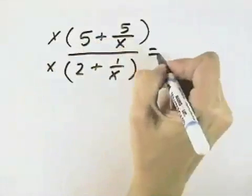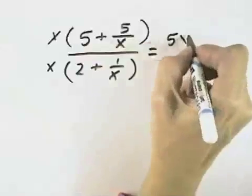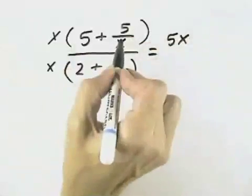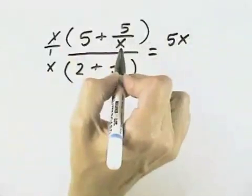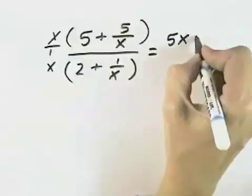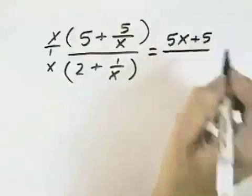When I do that, I'll see that I have a 5x on top, and then if I multiply this x times the 5 over x, that's the same as an x over 1 times 5 over x, the x's cancel, leaving a 5, so I have 5x plus 5.